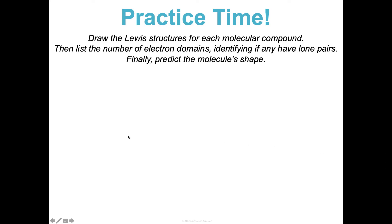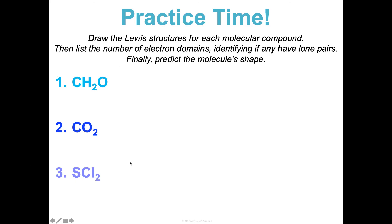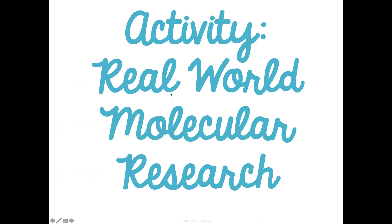Now we're going to do some practice problems. There are three molecular compounds — draw their Lewis structures, list the number of electron domains, identify any lone pairs, and then predict the molecular shape: linear, tetrahedral, bent, and so on. I'm going to skip over this so we don't see all the answers yet. In class, we'll also do a real-world molecular research activity — it won't be a giant project, but it'll help you see how molecular geometry applies to the real world. Alright, that's Concept 5.